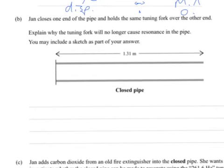Part B. Jan closes one end of the pipe and holds the same tuning fork over the other end. Explain why the tuning fork will no longer cause resonance in the pipe. You may include a sketch as part of your answer. Well, what we need to consider here is now the wavelength that can be in the pipe. And there's a couple of wavelengths. What we should really look at, perhaps, is the wavelength either side of that C note that we have above.